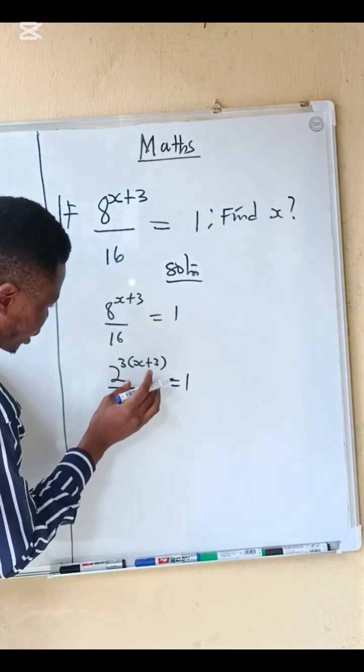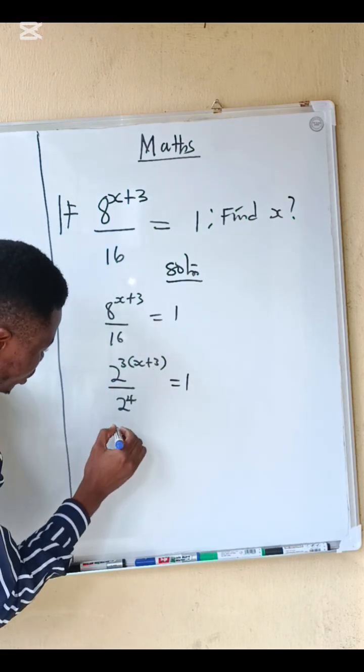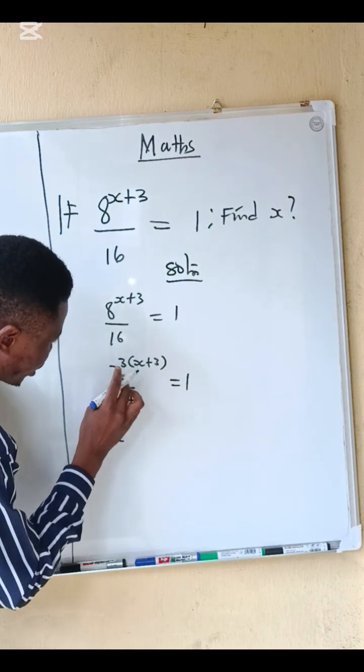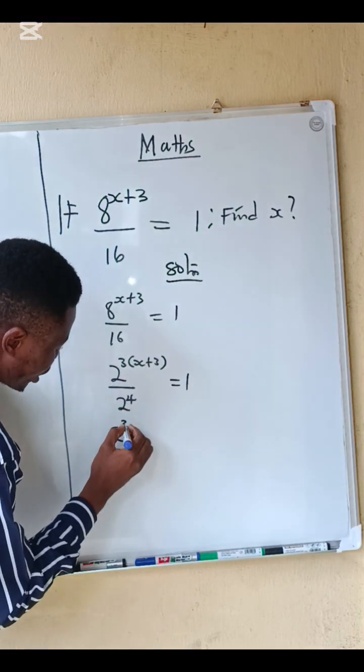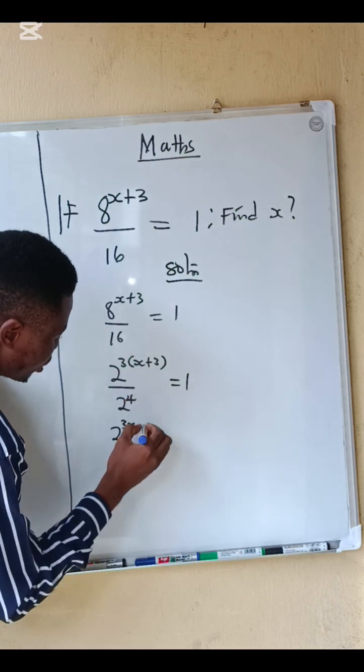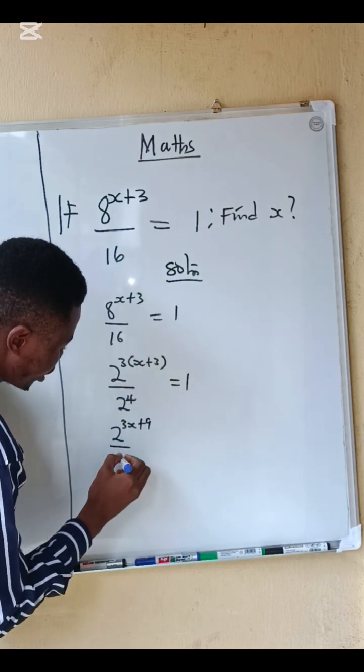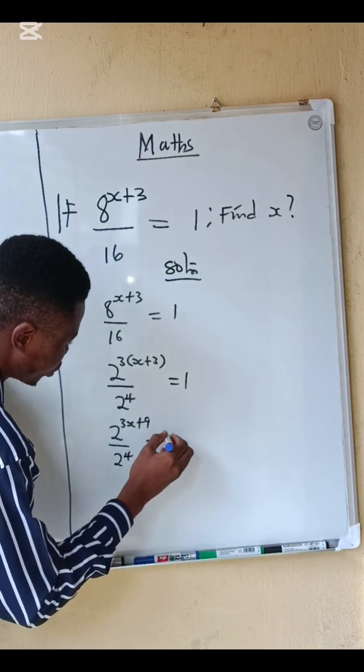Let's continue. We can open this bracket. You are going to have 2 power 3 times x gives you 3x, 3 times 3 gives you 9, divided by 2 power 4 equals to 1.